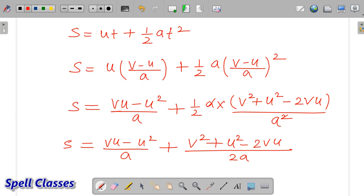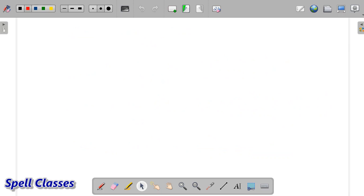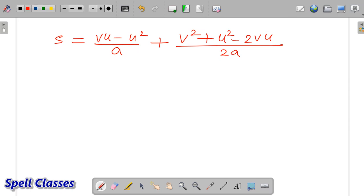On the left hand side we have s. Now we will take the LCM of the denominators. The LCM of a and 2a is 2a.